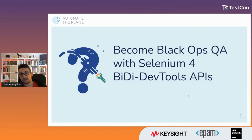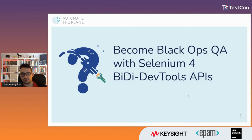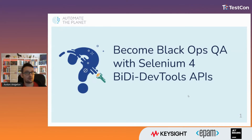As the name suggests, CDP is available for Chromium browsers only, which means you cannot use it for Firefox or Safari. To solve these problems, the Selenium maintainers have started working on the next-generation cross-browser automation and testing API called WebDriver Bidirectional Protocol. It doesn't have as many features as CDP yet, but they're slowly moving towards it. Selenium maintainers suggest using bidirectional APIs whenever possible.